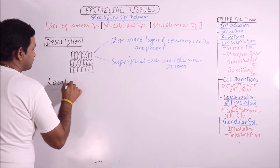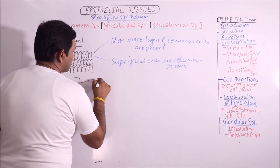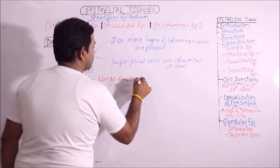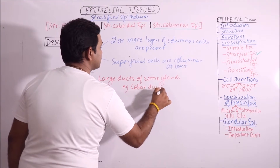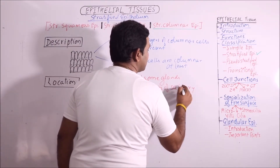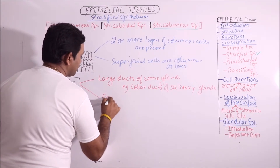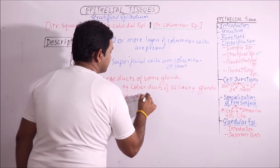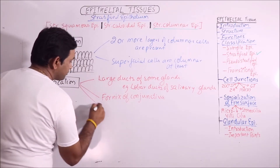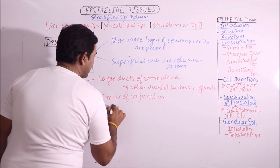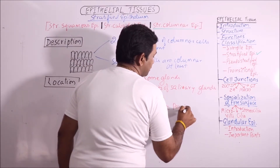Location. The location includes large ducts of some glands, and lobar ducts of the salivary gland. Also, the fornix of the conjunctiva — the region at the junction of bulbar and palpebral conjunctiva — and the cavernous urethra, meaning the penile urethra.